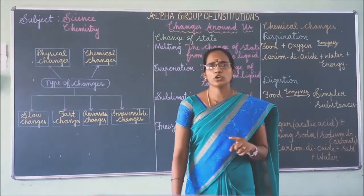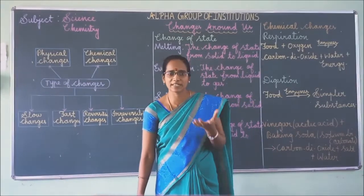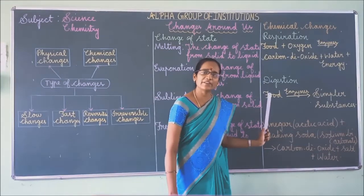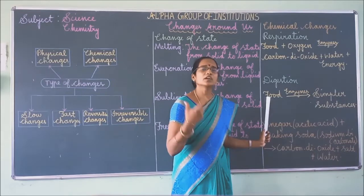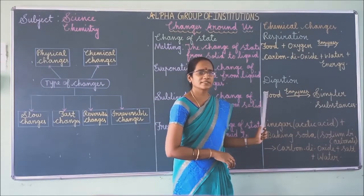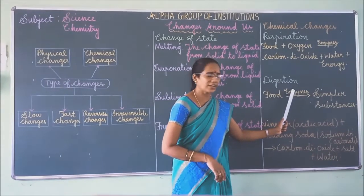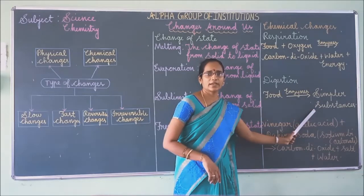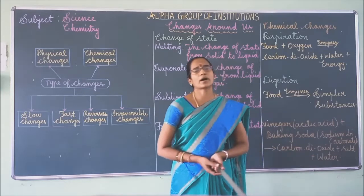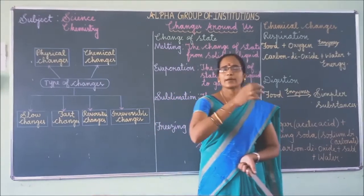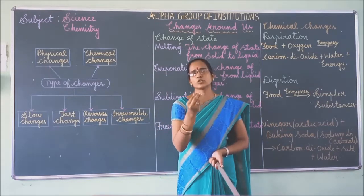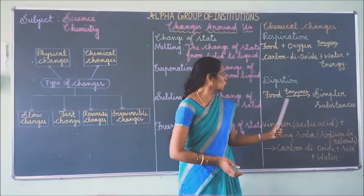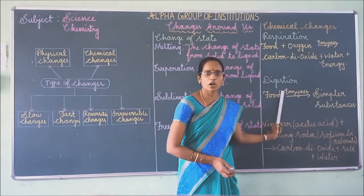Digestion of food is a chemical change. Our digestive system breaks down complex food substances into simpler substances. Carbohydrates, in the presence of enzymes, break down into simple sugars — that is sucrose. Proteins decompose to form amino acids. So digestion of food is an example of chemical change, and that point you should remember.